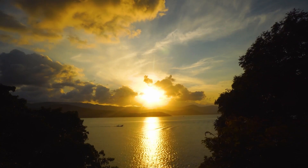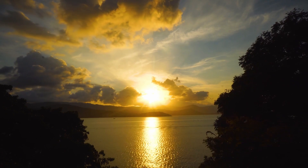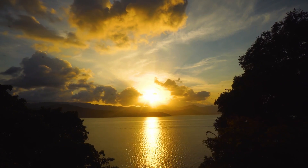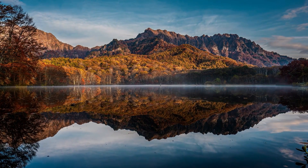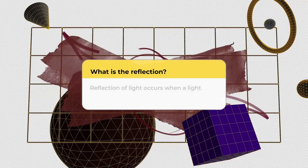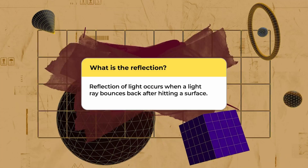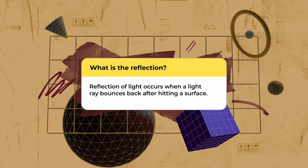Before we can fully appreciate the phenomenon, however, we need to understand a few basic things about light rays and how they propagate through a medium. The reflection of light is a basic and extremely common phenomenon. When a light ray bounces back after hitting a surface, we say that a reflection of light has occurred, or simply, the surface reflected that light.